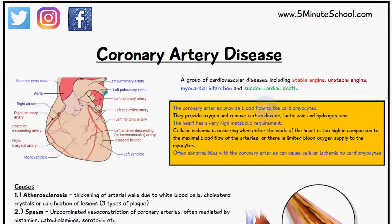Looking at the diagram on the left, these are the coronary arteries which supply the cardiomyocytes of the heart. They are important for providing oxygen and removing waste products like carbon dioxide, lactic acid, and hydrogen ions. The heart itself has a very high metabolic requirement.